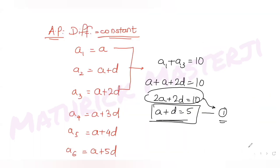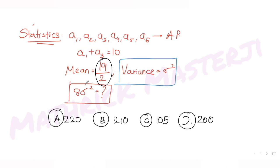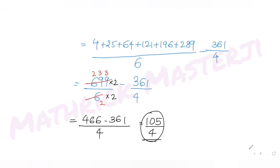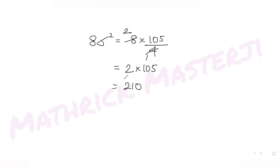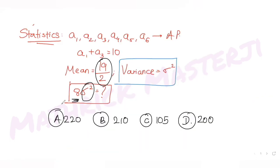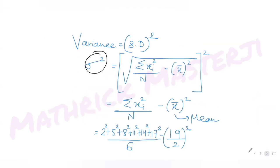The question asks for 8 times sigma square. So 8 × (105/4) = 2 × 105 = 210. The answer is 210, which matches option B. So B is the correct answer.